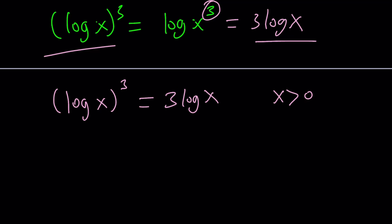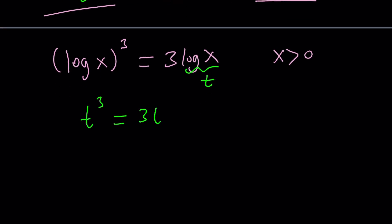Set log x equal to t, or something else, whatever. Because you see it repeats. So we get t cubed equals 3t. Now, one of the mistakes that people do is divide both sides by t and get rid of one of the t. So people divide by t. Let's simplify it because people like simplifying things, right? But this is not good. It's not good practice.